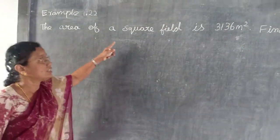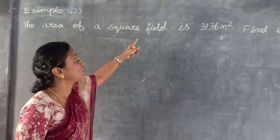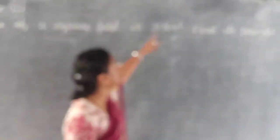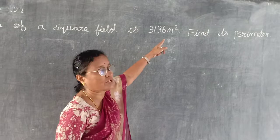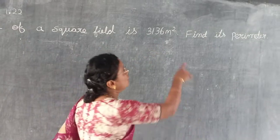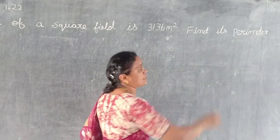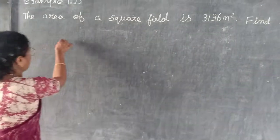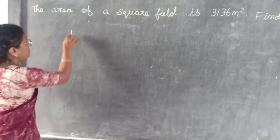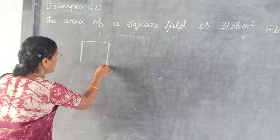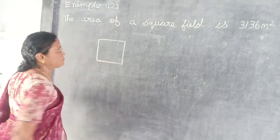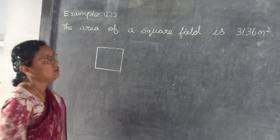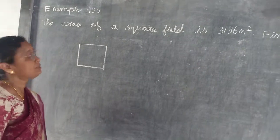The area of your square field is 3136 meters square. Find its perimeter. What is the shape of the field? Square field. Square means all the sides are equal. What are they asking? Perimeter.